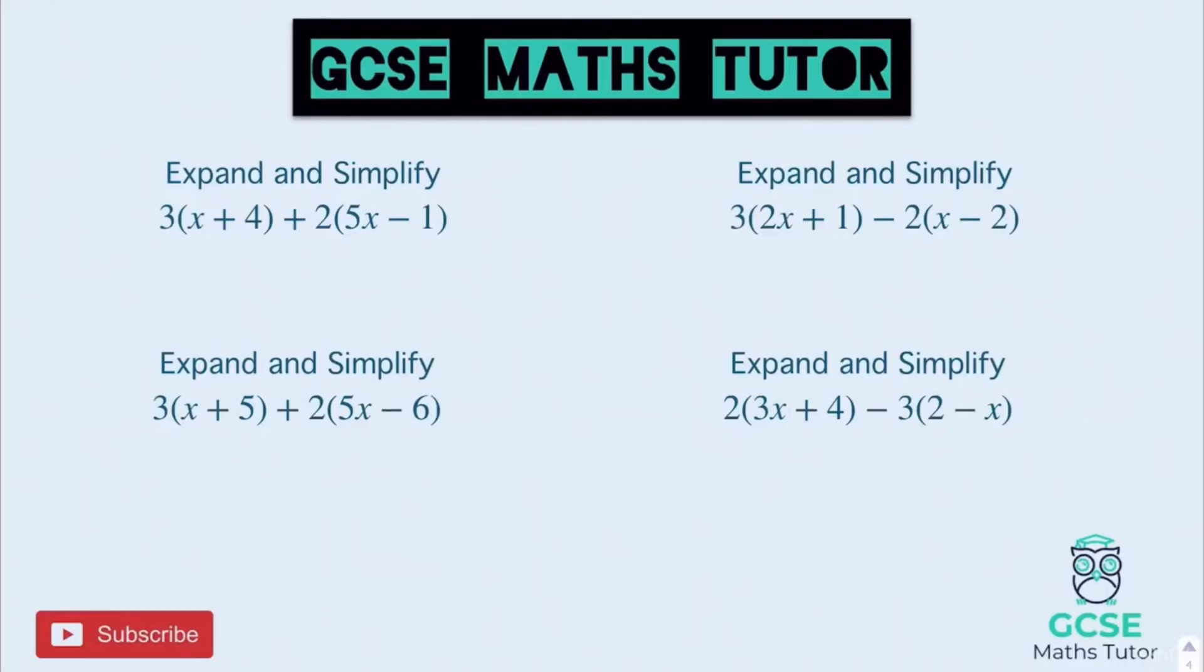Let's have a look. Expanding the first one we get 3x plus 12. Expanding the next one we get plus 10x minus 2. And tidying that all up, 3x and 10x makes 13x. And plus 12 minus 2 is plus 10. So 13x plus 10.